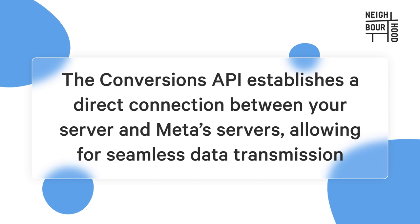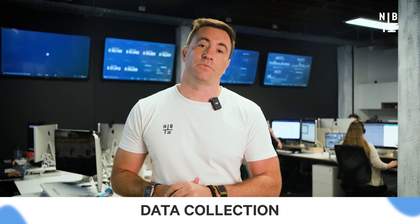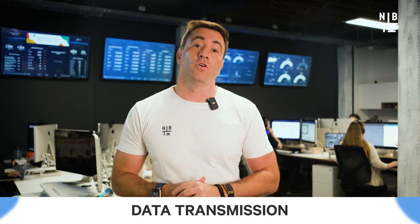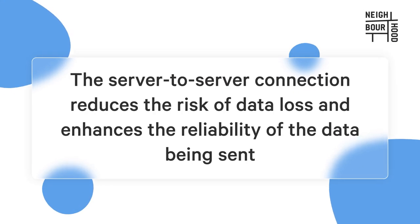So how does the conversion work? The Conversions API establishes a direct connection between your server and Meta's servers, allowing for seamless data transmission. Your server collects data from customer interactions such as page views, purchases, or form submissions. This data is then prepared for transmission to Meta, providing a comprehensive view of the user's behavior. The data is collected and sent directly from your server to Meta's servers using the Conversions API, bypassing the need for browser-based tracking and ensuring data is transmitted accurately and securely. The server-to-server connection reduces the risk of data loss and enhances reliability.